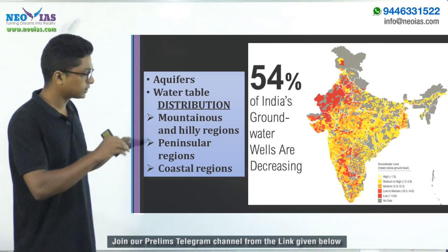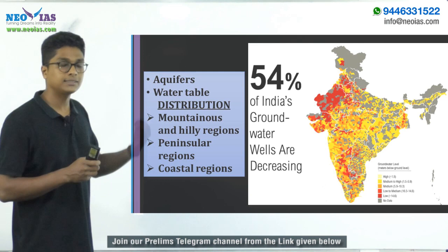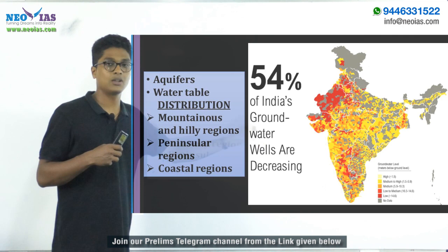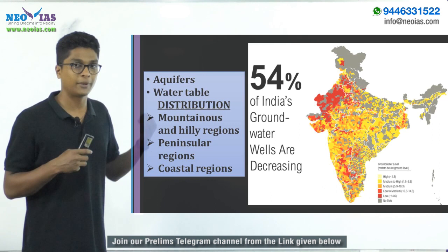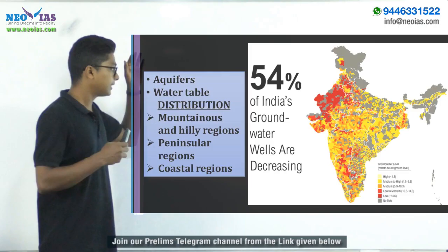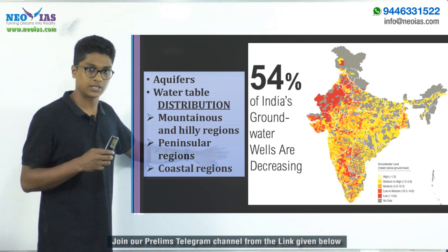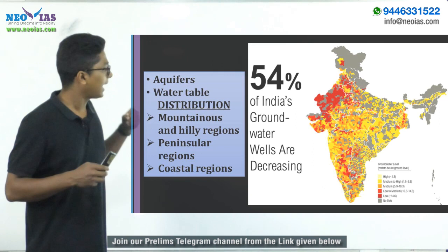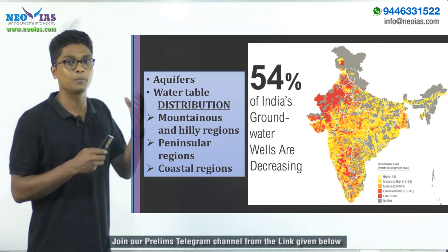In coastal areas — both the western and eastern coasts — there is more groundwater, but the risk is that it can become saline due to contact with ocean water. The oceanic water seeps into the groundwater, raising its salinity. To summarize: groundwater is less in mountainous and hilly regions, more in the northern plains, limited and near the surface in peninsular regions, and available but increasingly saline in coastal areas.